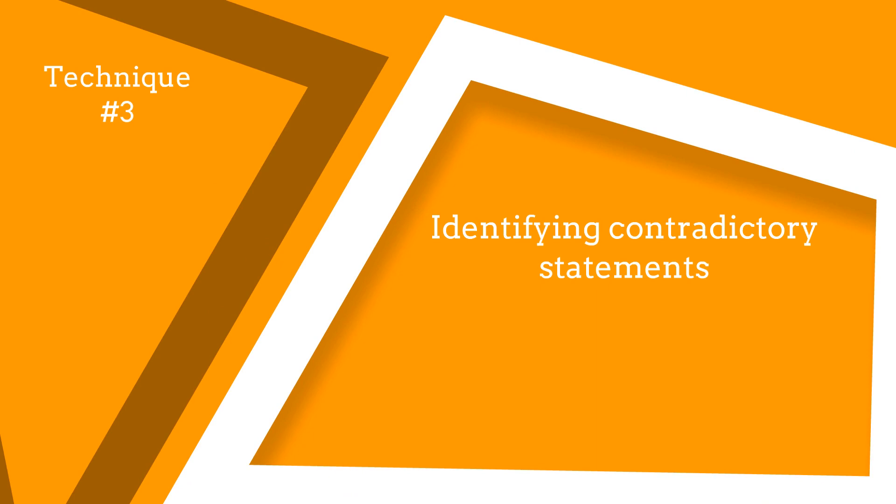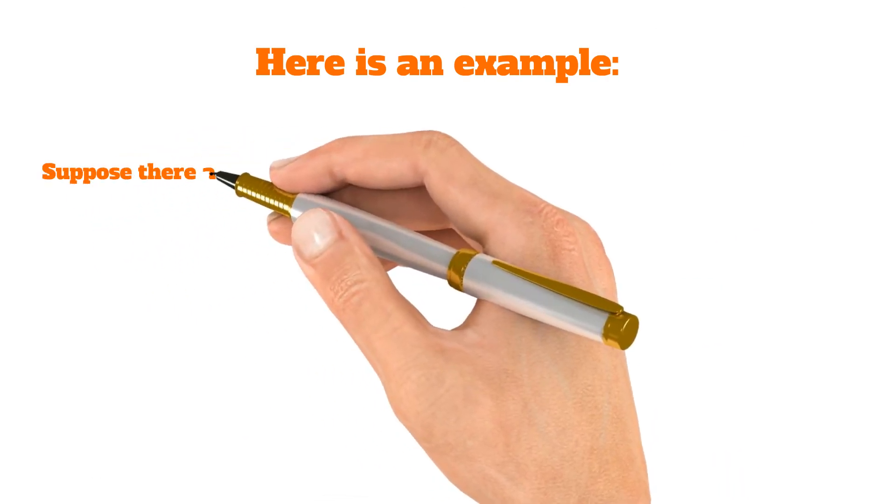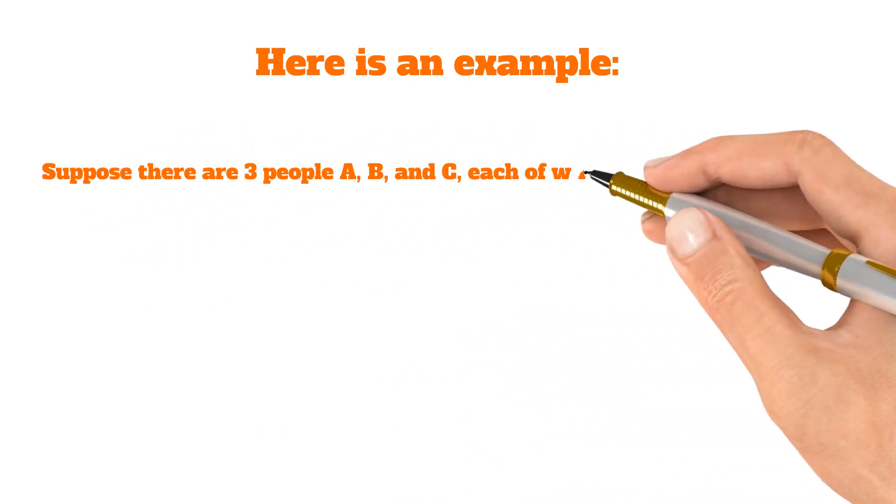Technique number three, identifying contradictory statements. Here is an example. Suppose there are three people, A, B, and C, each of whom make these claims.